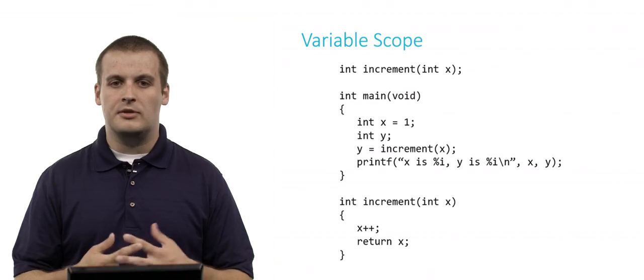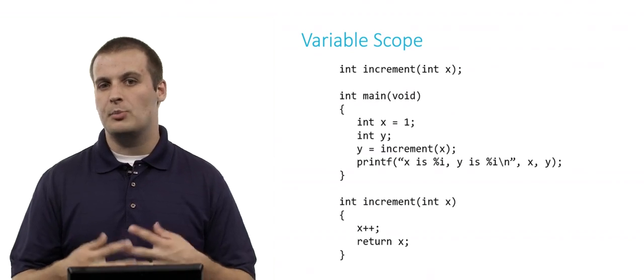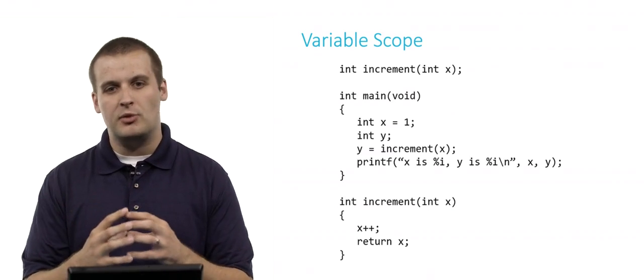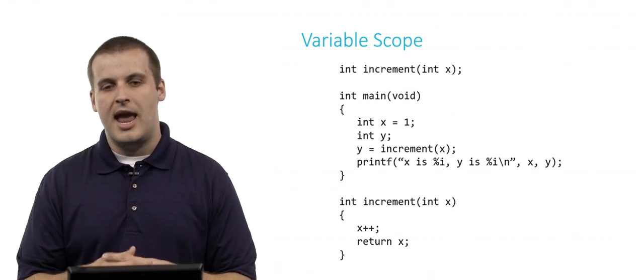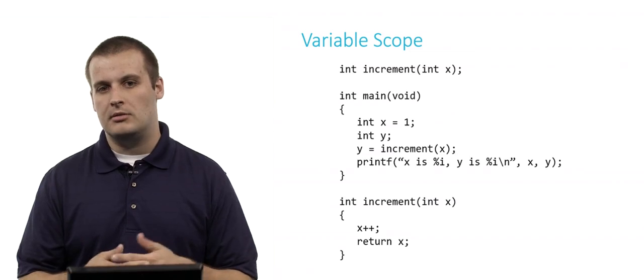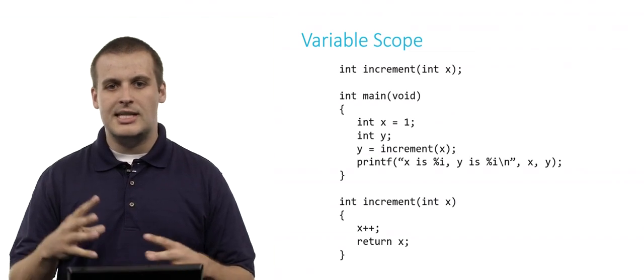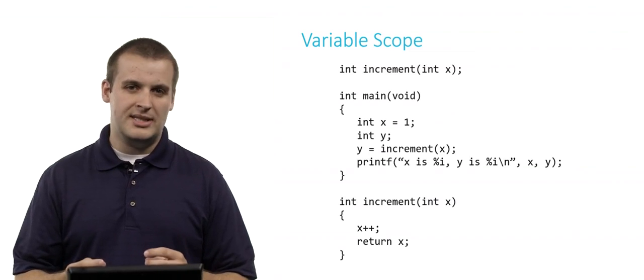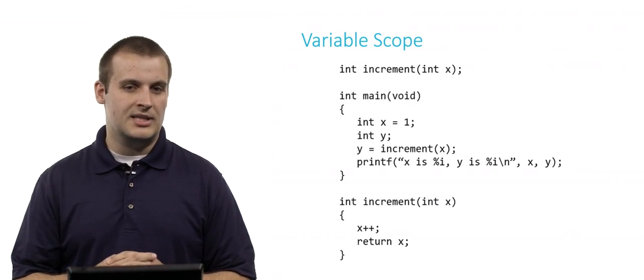Then we have main, a couple of lines of code in main, the last of which is a print statement. And remember, that's the question here. What is actually going to be printed at the end of this function? And then we actually have the definition of increment below. So take a minute, step through the code, trace things out. Do you know what will be printed at the end of this particular program?